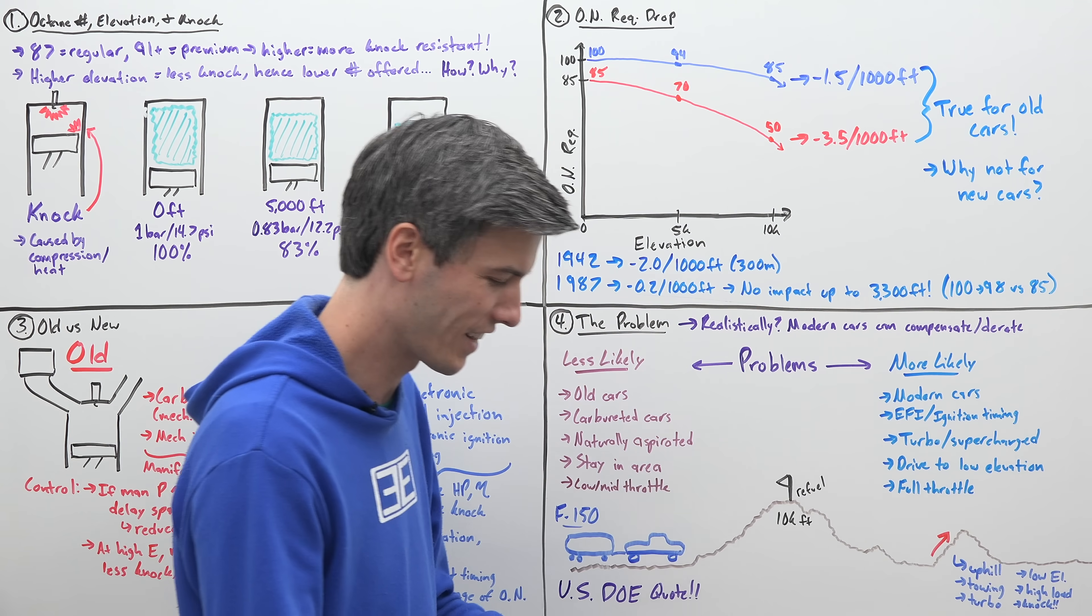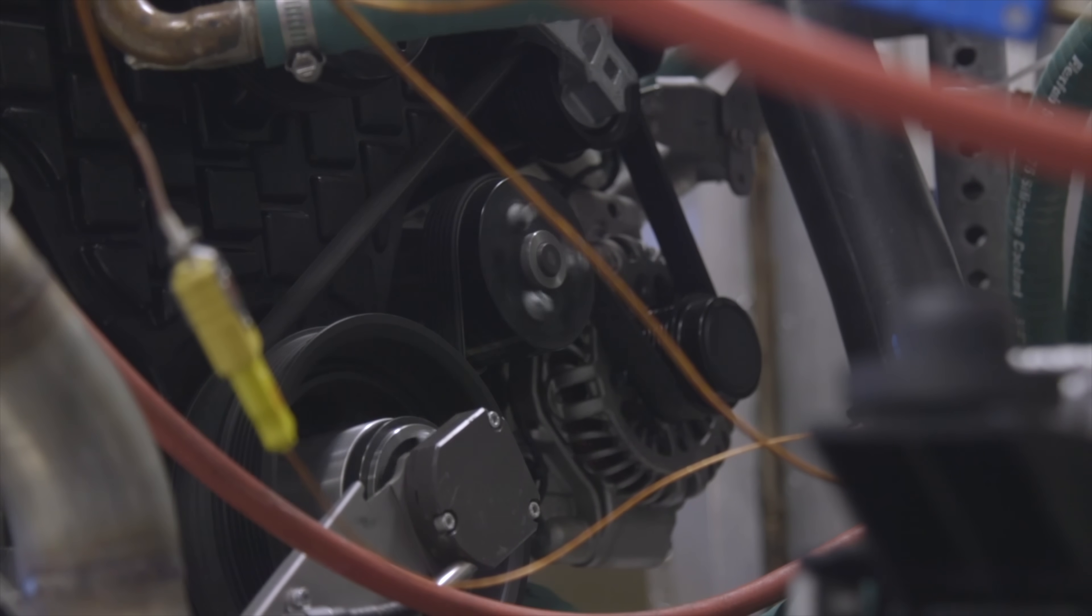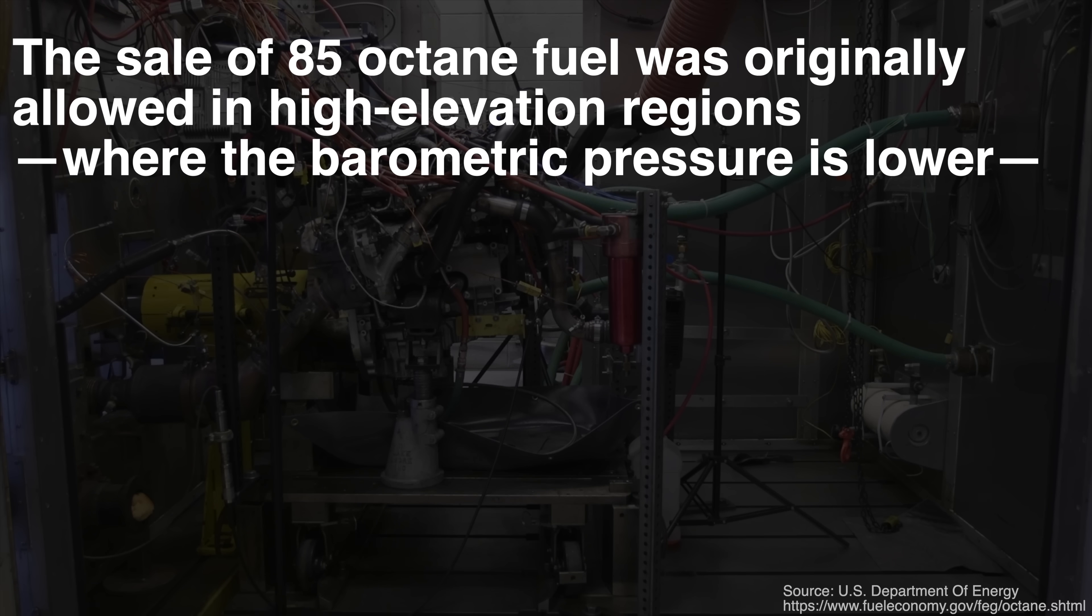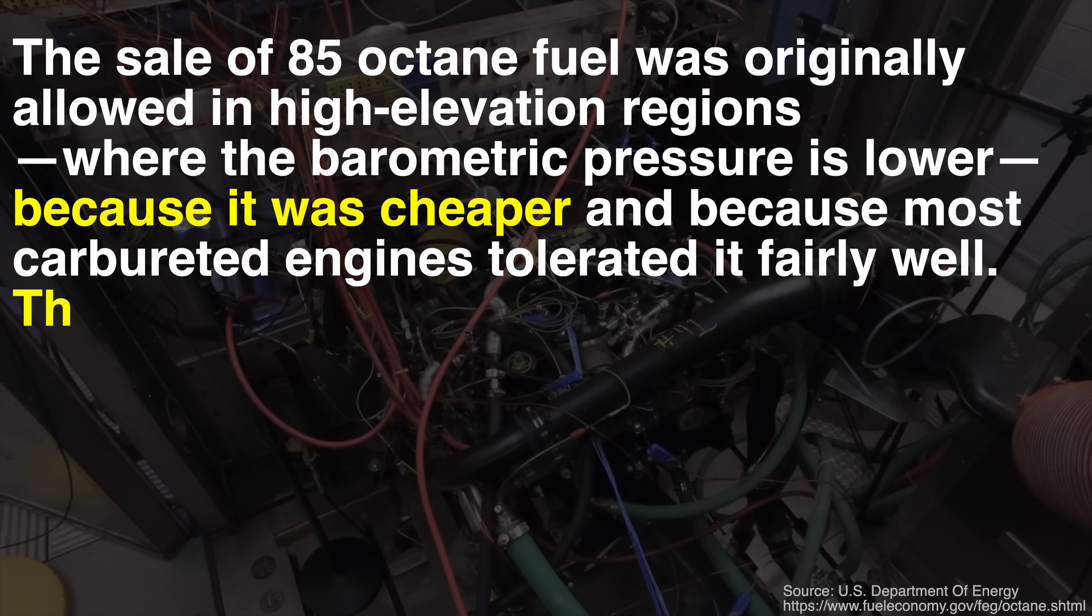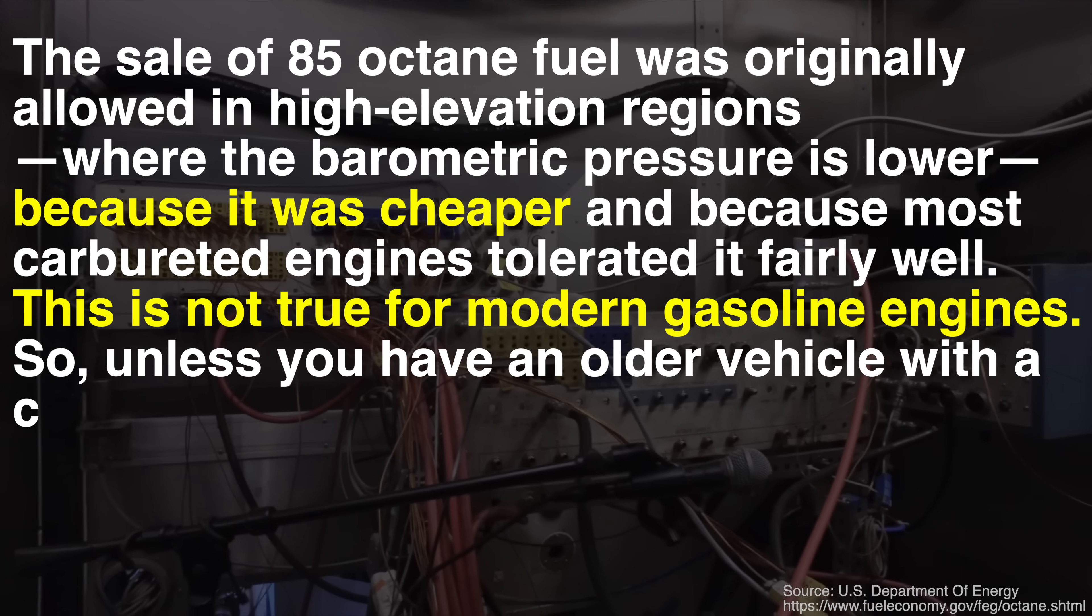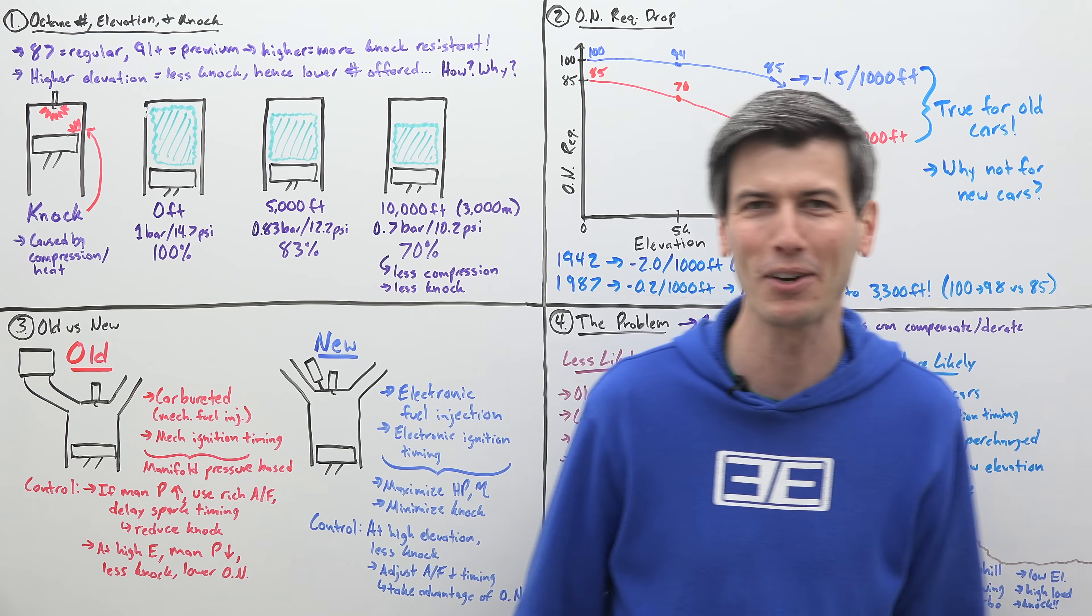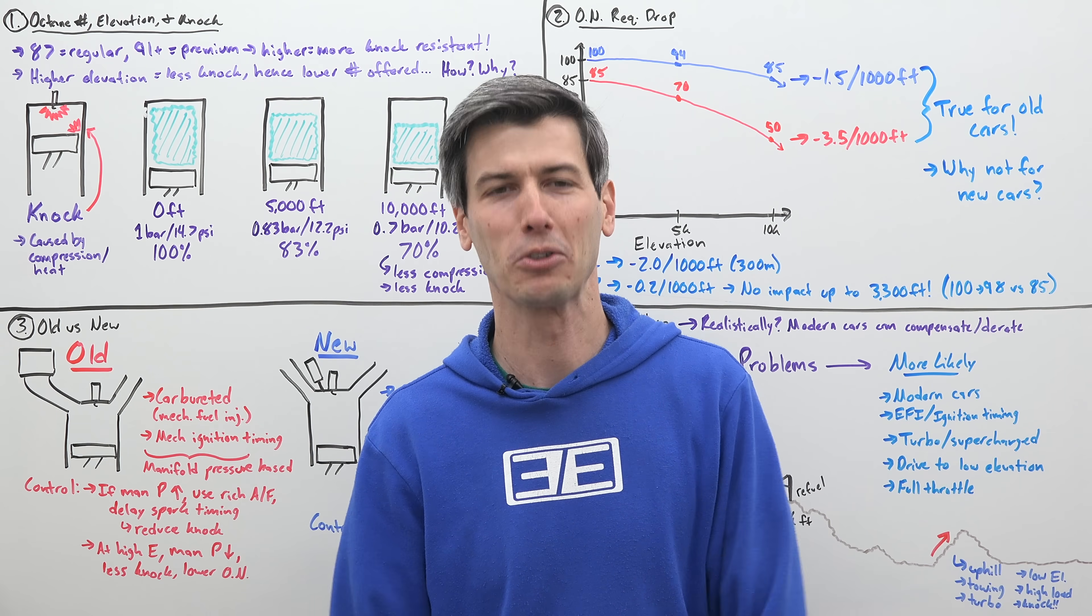One final quote from the US Department of Energy on 85 octane fuel. They say the sale of 85 octane fuel was originally allowed in high elevation regions where the barometric pressure is lower because it was cheaper and because most carbureted engines tolerated it fairly well. This is not true for modern gasoline engines. So unless you have an older vehicle with a carbureted engine, you should use the manufacturer recommended fuel for your vehicle, even where 85 octane fuel is available. That's just pretty crazy to me because we're allowing the sale of this fuel in the US and then saying don't use it with your modern car. That's pretty bonkers.